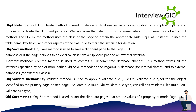OBJ Save method is used to save a clipboard page to the Pega Rules database, or if the page belongs to an external class, save it to an external database. Commit method is used to commit all changes — it writes all instances specified by one or more earlier OBJ Save methods to the Pega Rules database for internal classes, and to external databases for external classes. OBJ Validate method is used to apply a validate rule (rule-obj-validate rule type) for the object identified on the primary page or step page. A validate rule can call edit validate rules (rule-edit-validate rule type). OBJ Sort method is used to sort the clipboard pages that are the values of a property of mode page list.